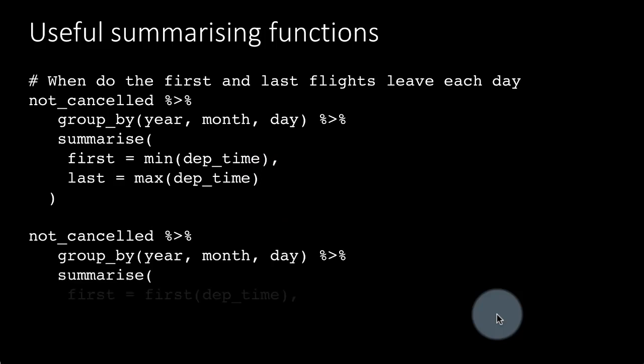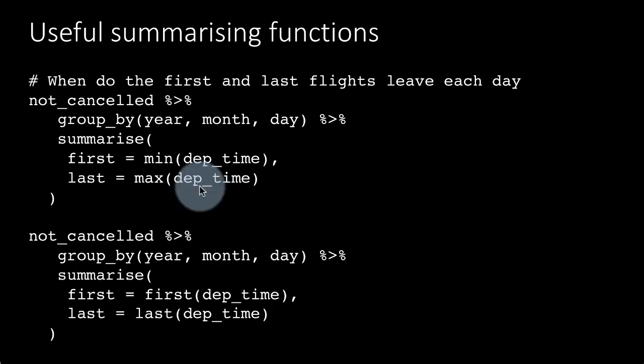Alternately you can also do summarize first is first, last is last. Now both of these will give the same results simply because the data frame is ordered chronologically. If it were not ordered chronologically, then the correct way to get the first and last flights would be this.